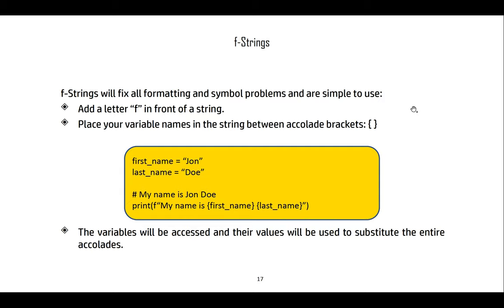F-strings are very simple to use. All you need to do is add the letter f in front of the string and place all your variable names between curly brace brackets (accolades — the squiggly ones). For example, if the first name is John and the last name is Doe and we want to print 'my name is John Doe', we write: my name is, then first name in accolades, a space, then last name in accolades.